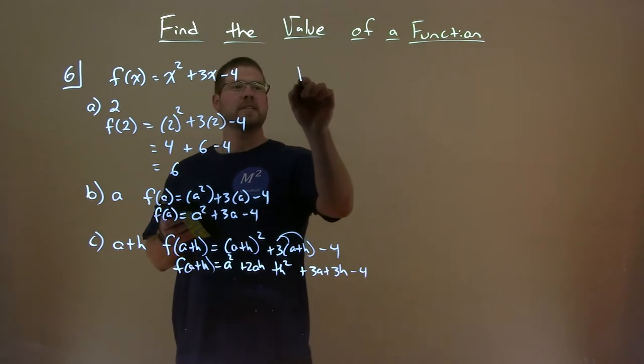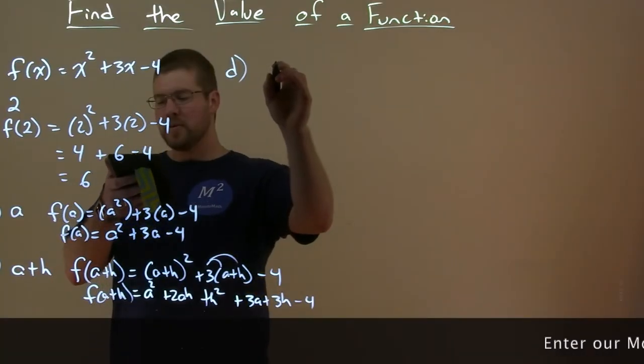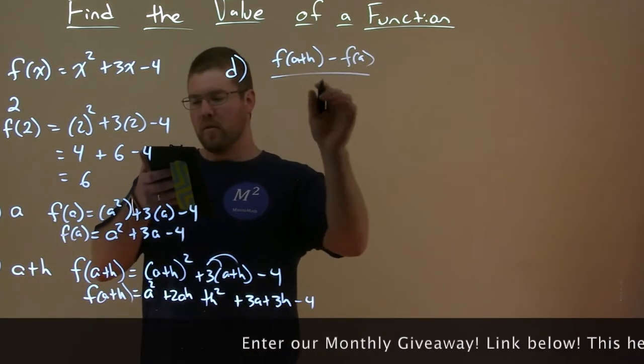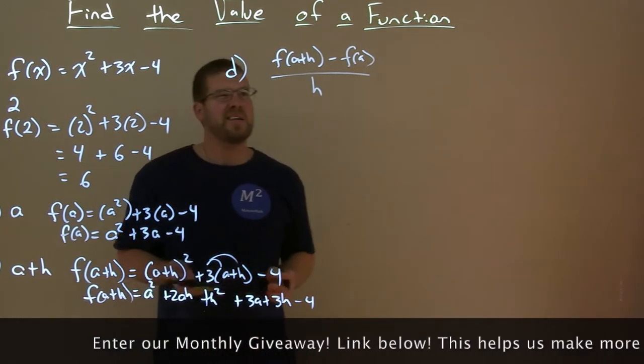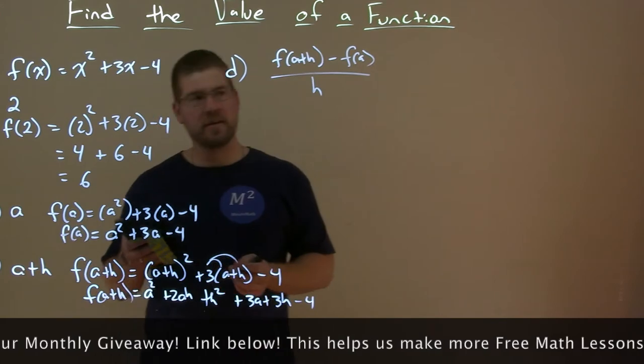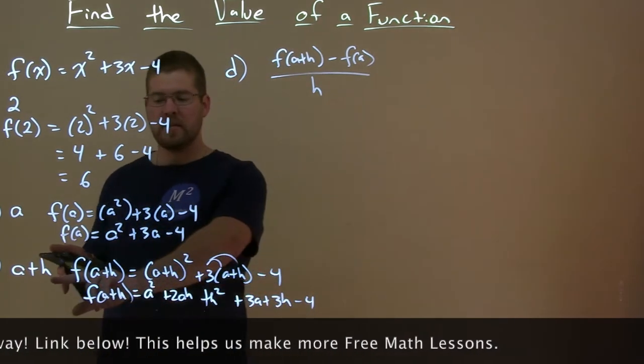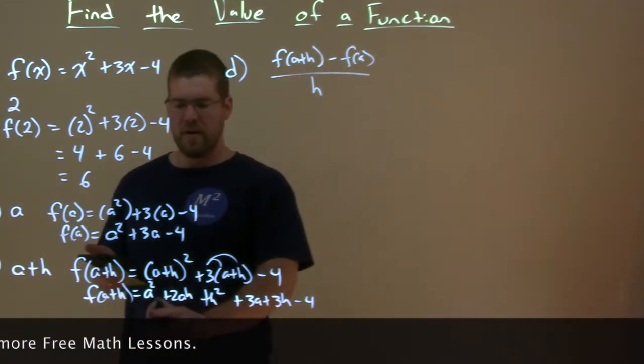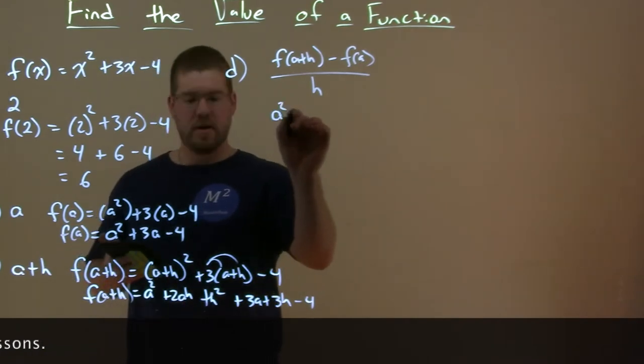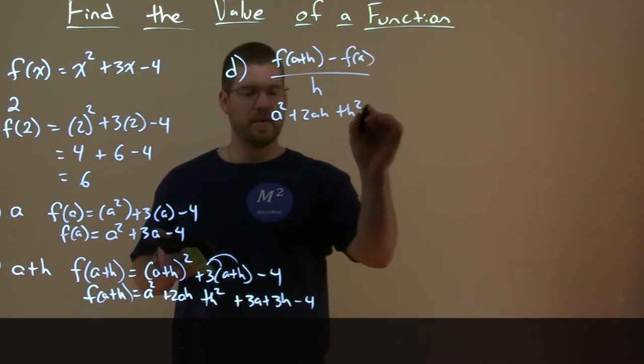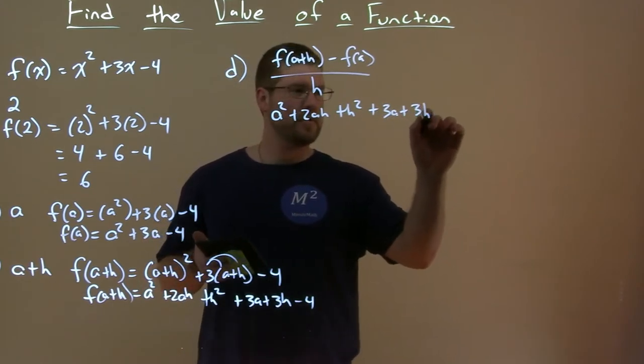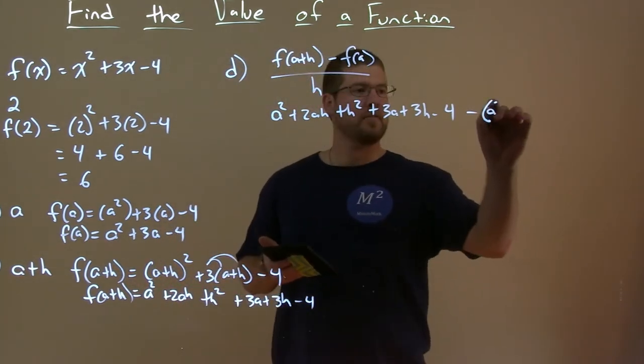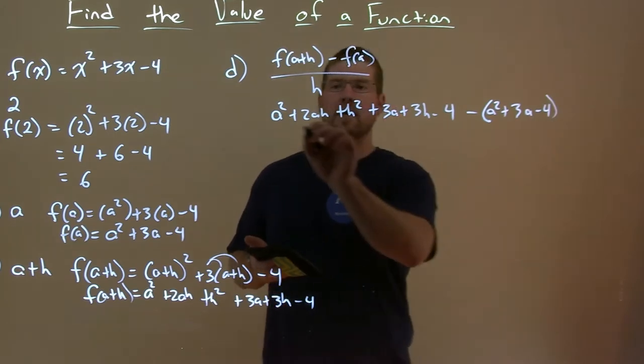Lastly, for part d they give us this: we want to evaluate [f(a+h) - f(a)] over h. This is something you'll see more often later on, especially in calculus. Luckily, we found these values. We know f(a+h) is a squared plus 2ah plus h squared plus 3a plus 3h minus 4, minus f(a), which is a squared plus 3a minus 4, all over h.